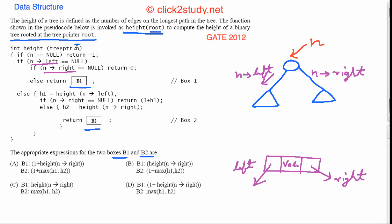The function signature is: int height(tree pointer n). If n is null, return -1, meaning there is no tree. If n->left is null and n->right is also null, that means this is the only node in the tree, so the height is 0. These base cases are straightforward.